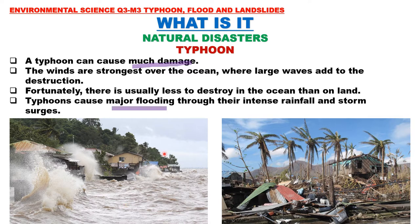Here are some pictures of the damage brought about by a typhoon. When there is a typhoon, the winds are very strong over the ocean and large waves add to the destruction. After a typhoon, places near coastal areas experience destroyed houses, fallen plants and trees, and widespread destruction and death.